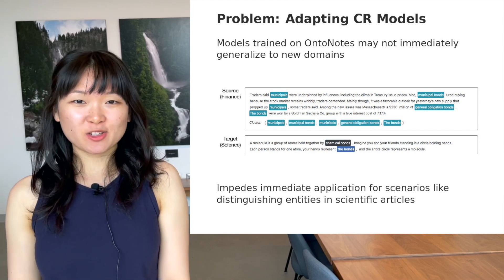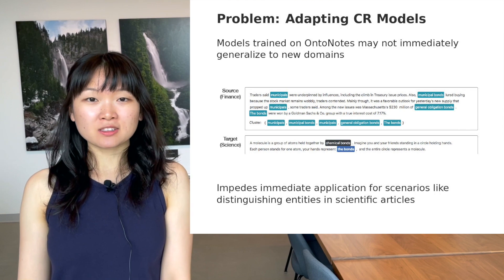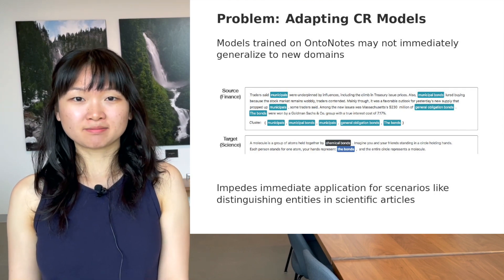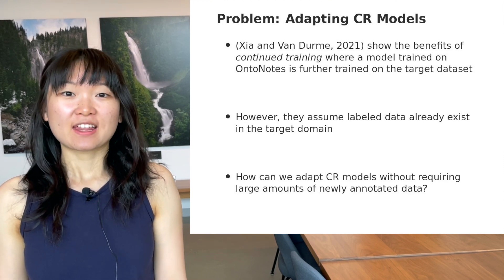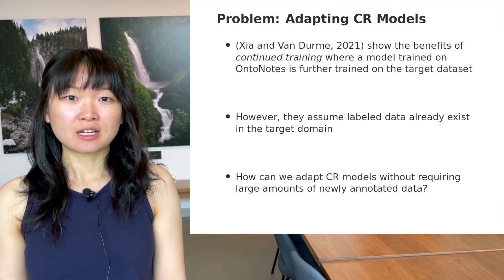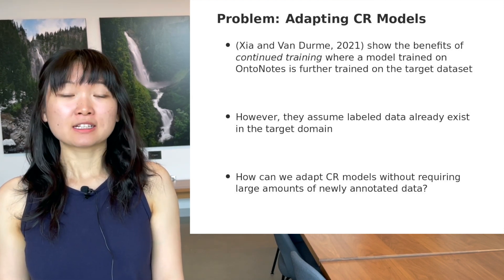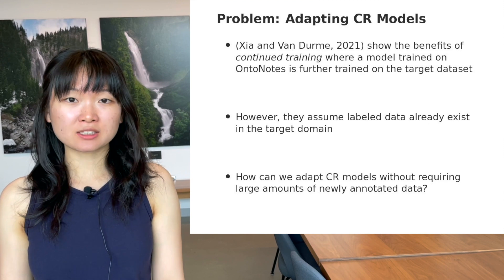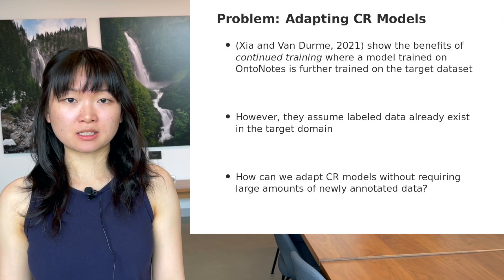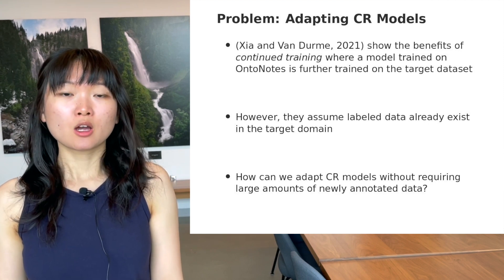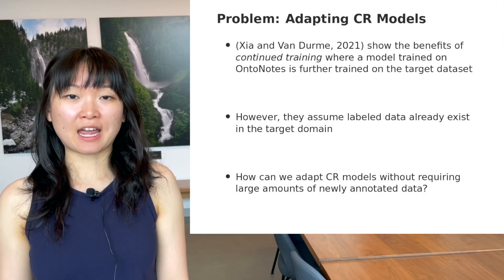Models that were originally trained on OntoNotes may not be accurate anymore for domains like scientific articles or tourist reviews. Patrick, from early in this video, has shown in his work that continued training the model on the target dataset is useful for domain transfer. However, they did not consider the time and cost of obtaining labeled data in the target domain. For practical purposes of coreference resolution, we would like methods that can easily transfer models without relying on an abundant supply of annotations.